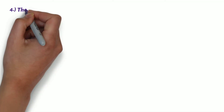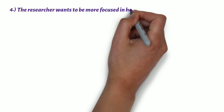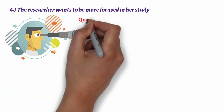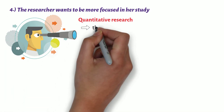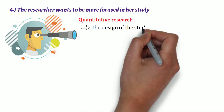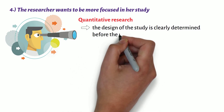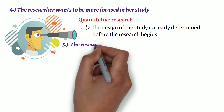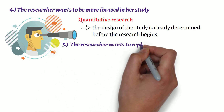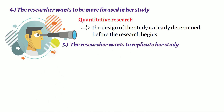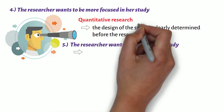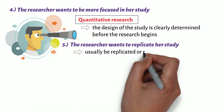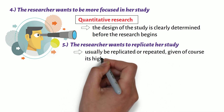Fourth, the researcher wants to be more focused in her study. This is because in quantitative research, the design of the study is clearly determined before the research begins. Fifth, the researcher wants to replicate her study. Quantitative research can usually be replicated or repeated, given its high reliability.